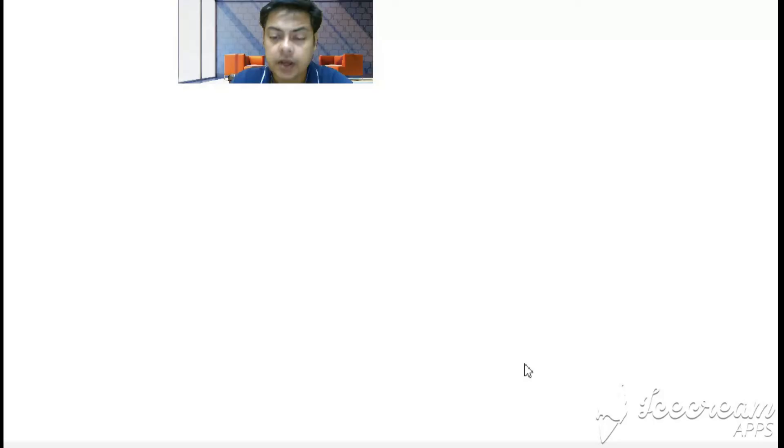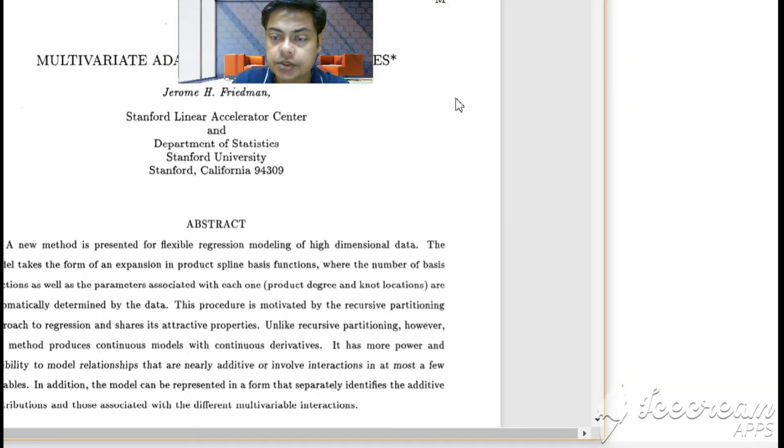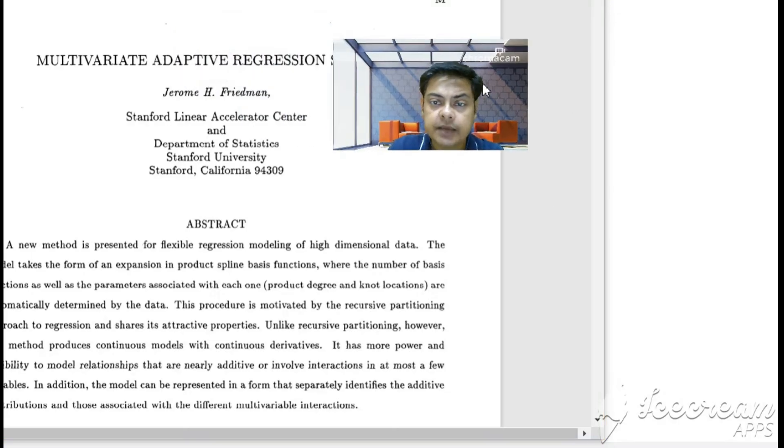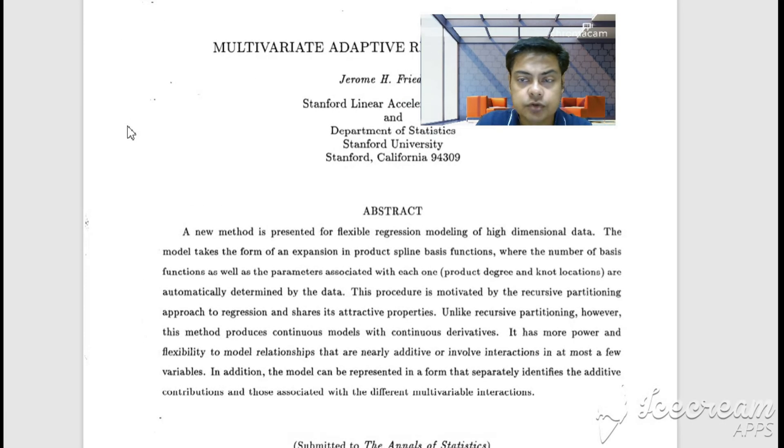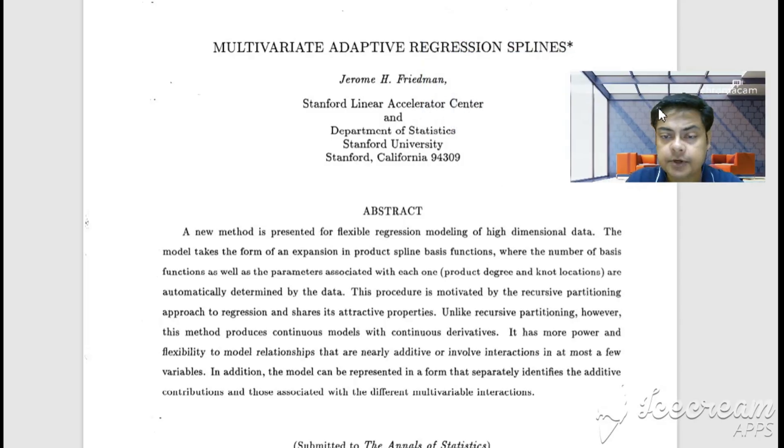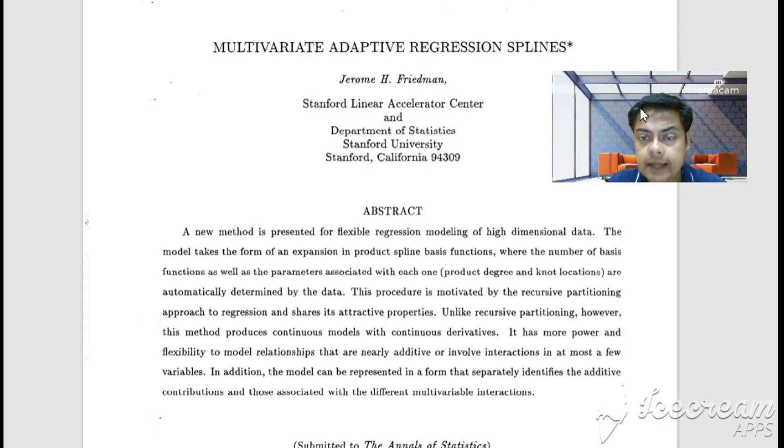Now let's see the paper that actually put MARS into the picture. So let me show you the paper. This is the original paper: 'Multivariate Adaptive Regression Splines' by Jerome Friedman, Stanford Linear Accelerator Center, Department of Statistics, Stanford University, California. All the things that I've said in this video is basically a representation, adaptation, and easy understanding from this paper.